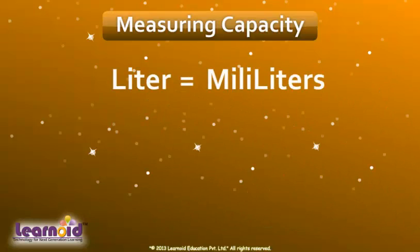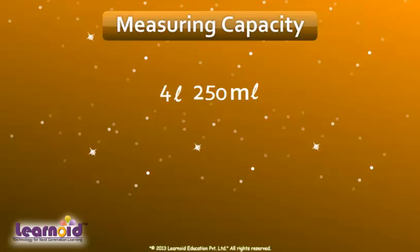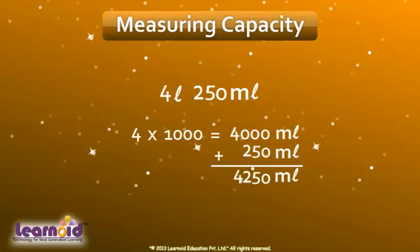To convert into milliliters, first multiply liters by 1000 and then add other milliliters. For example, 4 liters and 250 milliliters will be equal to 4000 milliliters plus 250 milliliters, which equals 4250 milliliters.